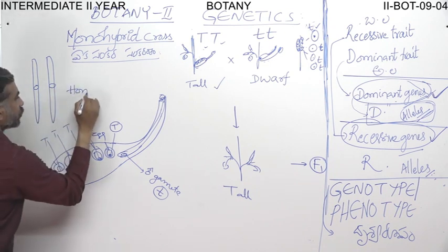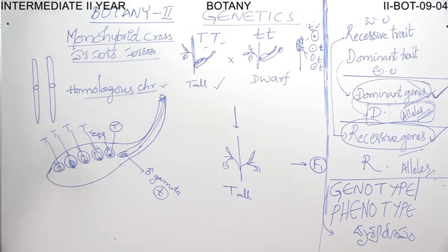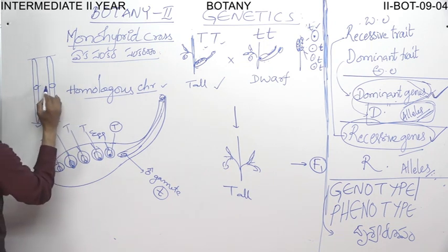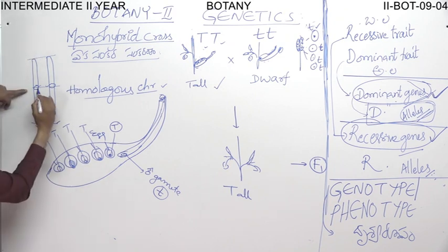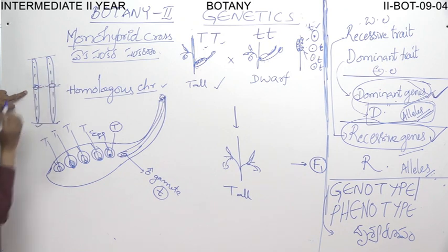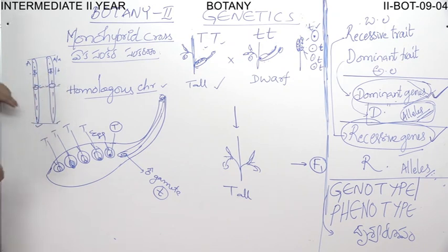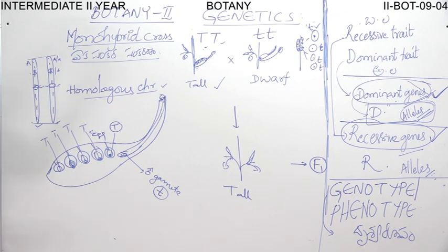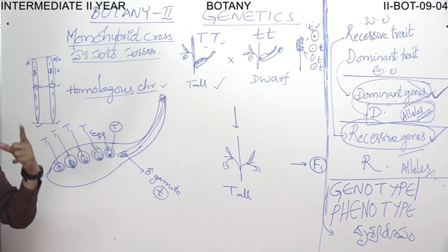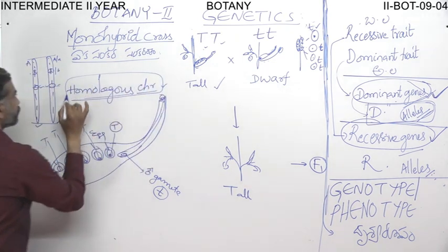What are homologous chromosomes? Two chromosomes of the same size, with the centromere at almost the same position, and a similar gene sequence on both chromosomes. Suppose capital A is on one chromosome, capital A or small a is on the other; capital B on one, capital B or small b on the other. If two chromosomes are the same size, centromere at the same position, and gene sequence similar, that pair is known as homologous chromosomes.